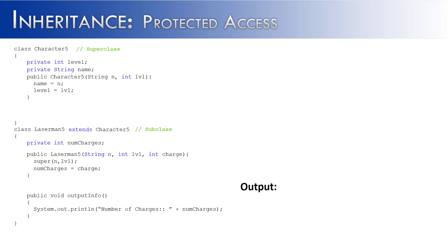Let's go ahead and write some code that's going to utilize these two classes and the inherited relationship. We say Laserman5 laser equals new Laserman5. Zap is going to be the name, 9 is going to be the level, and 90 is going to be the number of charges. So now that the object is initialized, we're going to output its info. It's only going to output one piece of information, the number of charges. It's going to say number of charges is 90. Works great. Does just what we expected it to do.